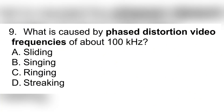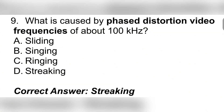Question 9. What is caused by phase distortion at video frequencies of about 100 kHz? A. Sliding. B. Singing. C. Ringing. D. Streaking. Correct answer: D. Streaking.